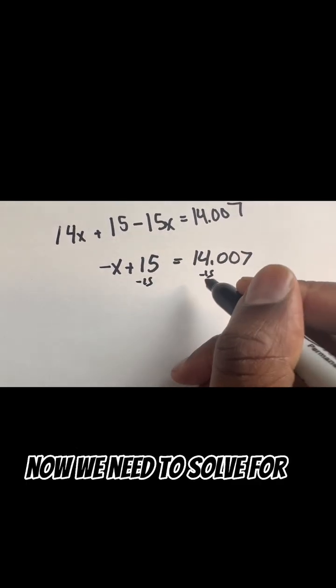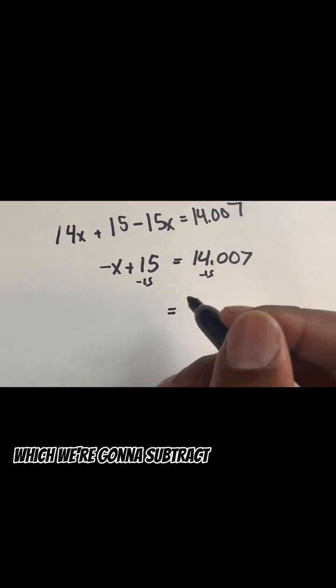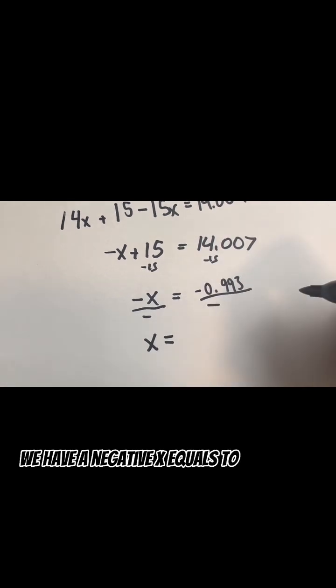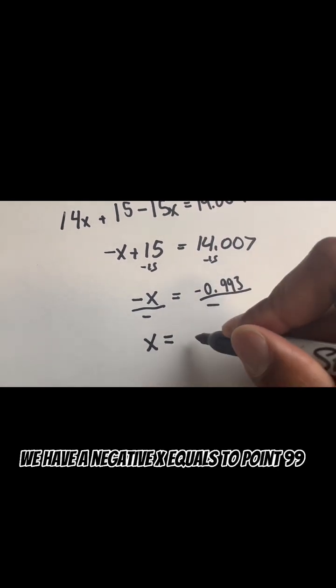Now we need to solve for our x, which we're going to subtract 15 from both sides. And when that happens, we have negative x equals negative 0.993.